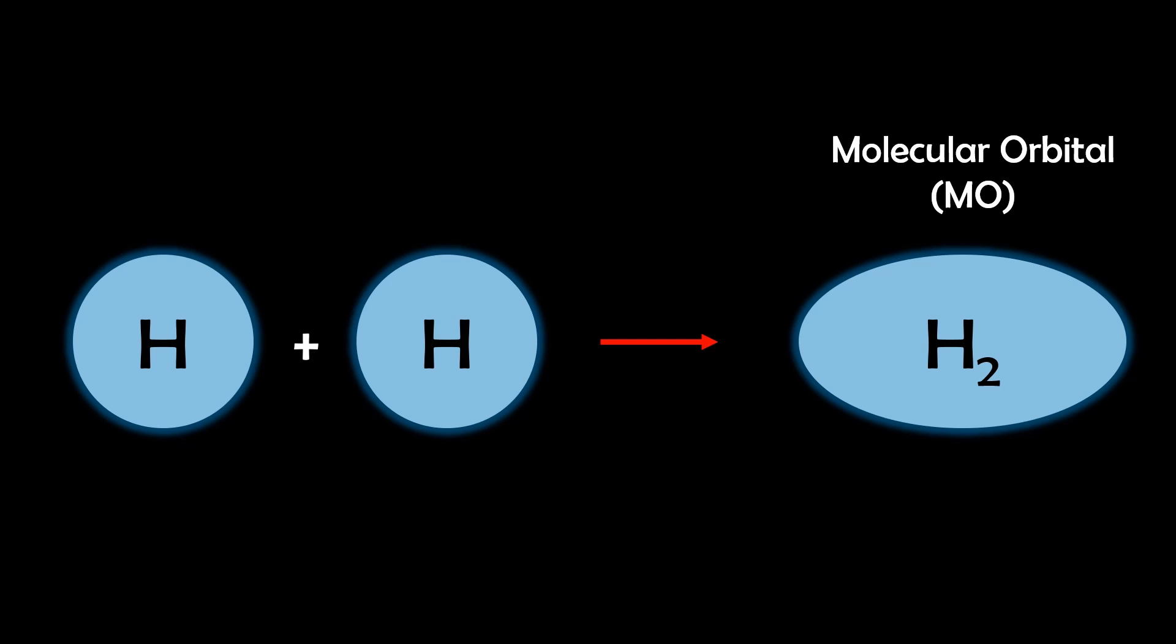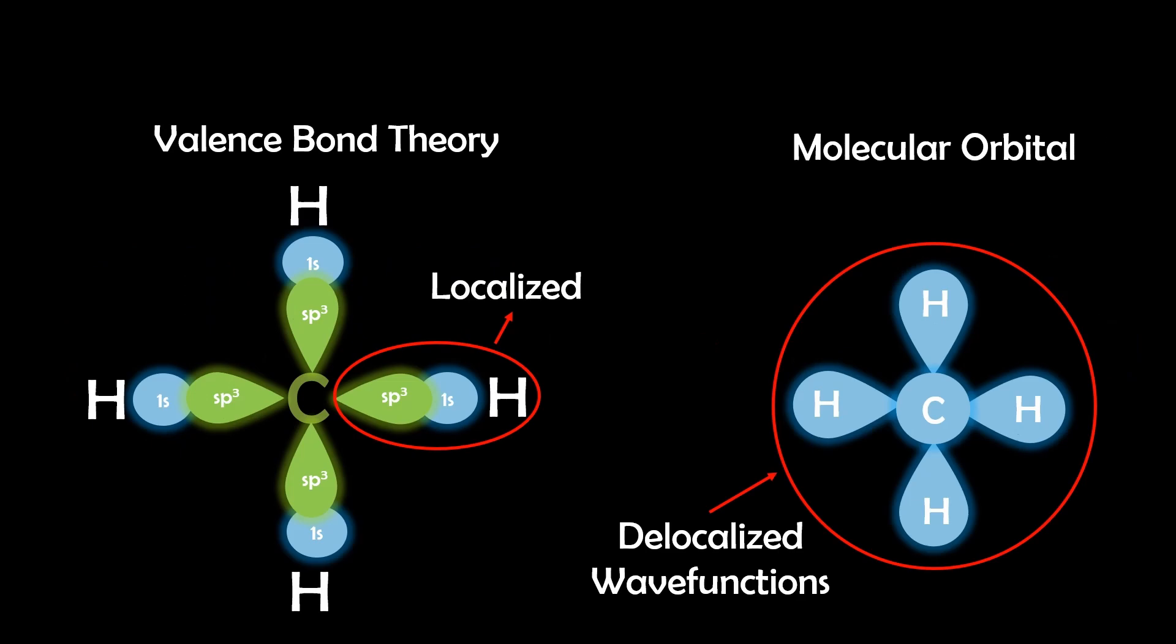Atoms form bonds when their orbitals overlap and this overlap creates molecular orbitals which are quantum states that extend over the whole molecule. Unlike valence bond theory which sees electrons as localized between atoms in hybrid orbitals, molecular orbital theory treats bonding electrons as delocalized wave functions giving a more accurate and quantum level view of bonding.